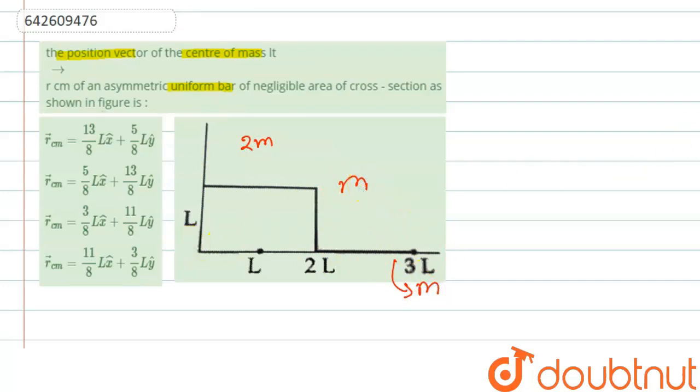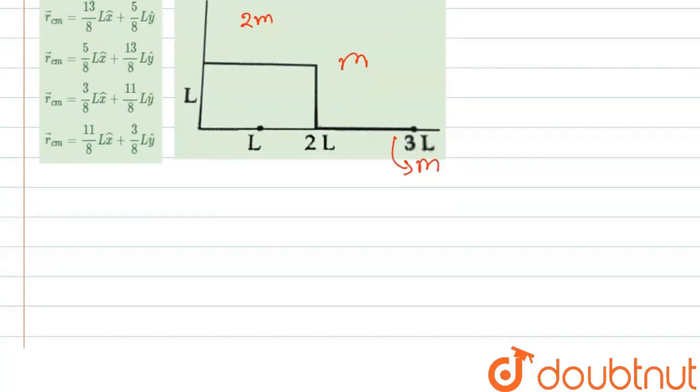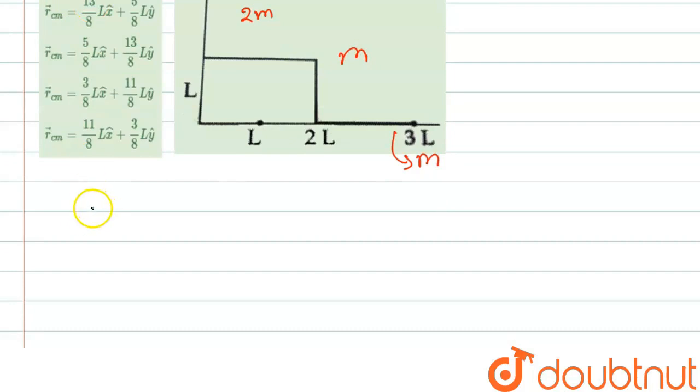So we have to find out the x component and y component of this center of mass. If we calculate for the x component of center of mass, we can write the mass of the first bar, that is 2M, into the center of this bar. The middle point of this bar, for x component we see that from origin it is a distance of 2L.